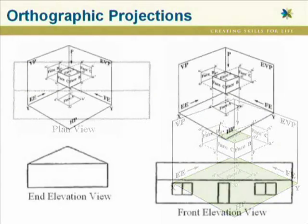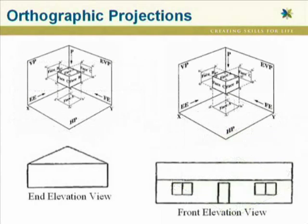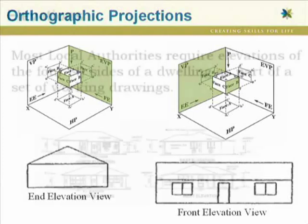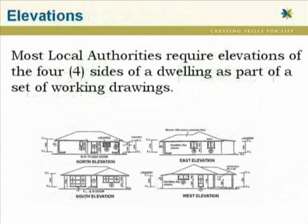Views of the sides of an object are called elevations. These can be front-end elevations, but more commonly you'll see north, south, east, and west elevations. Sometimes they're also referred to as elevations 1, 2, 3, 4, and so on.